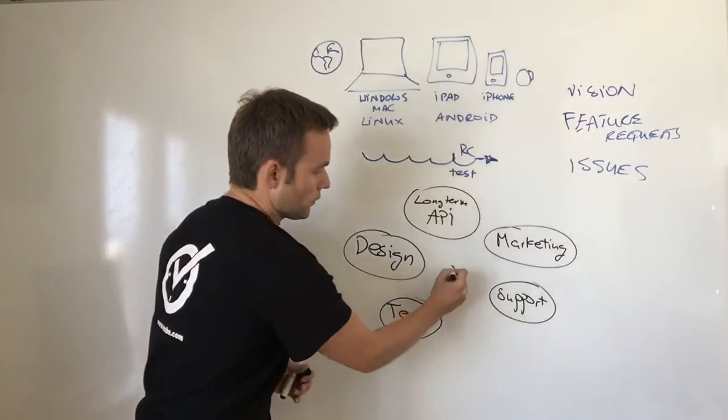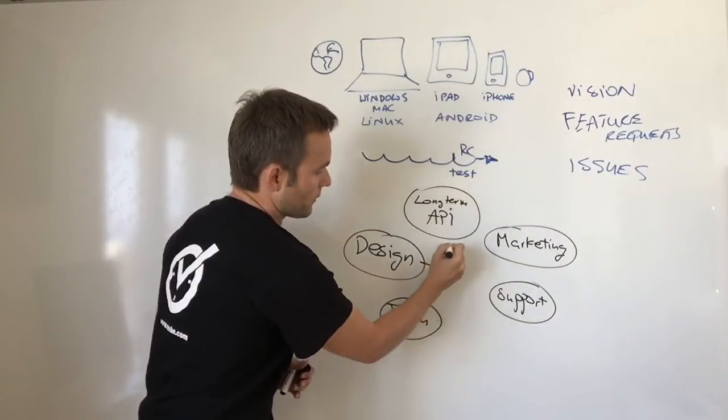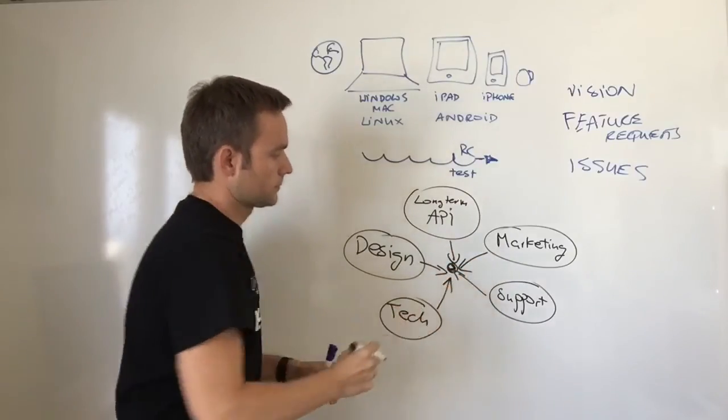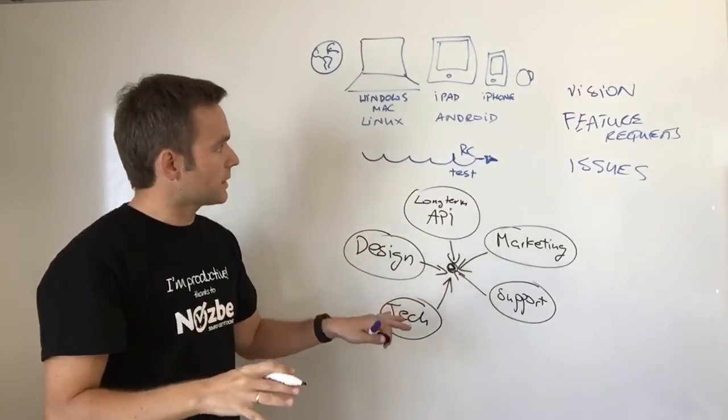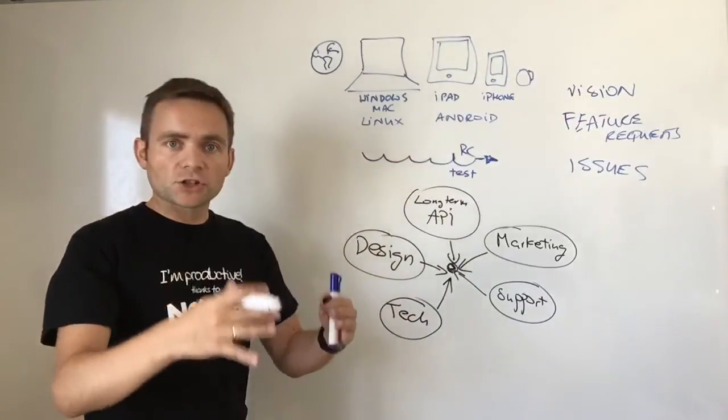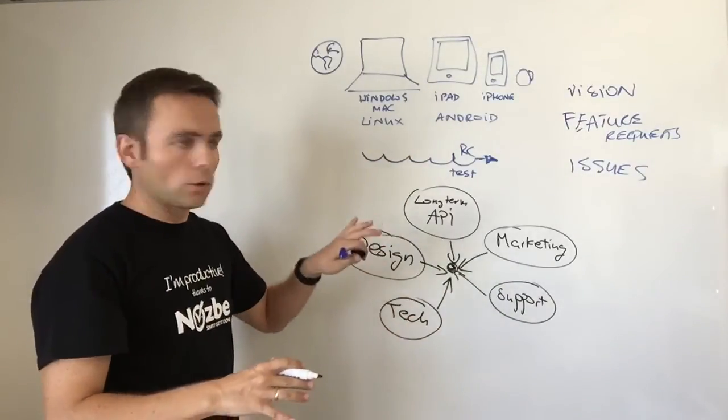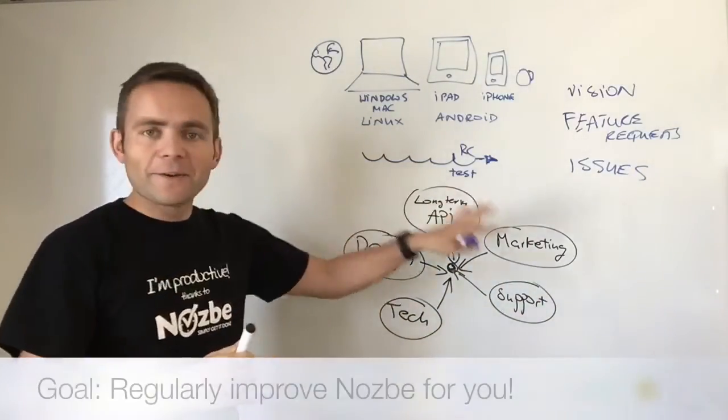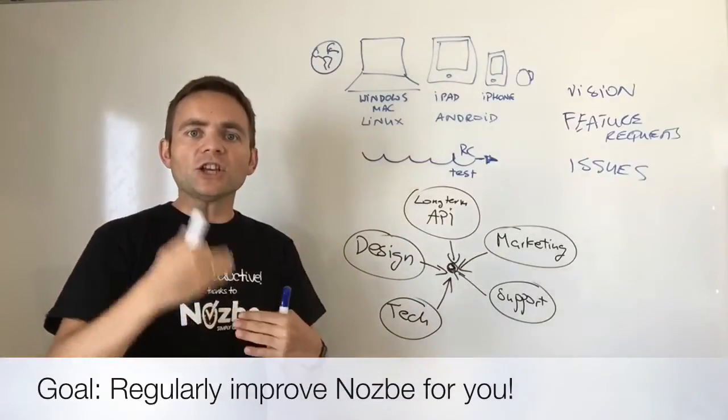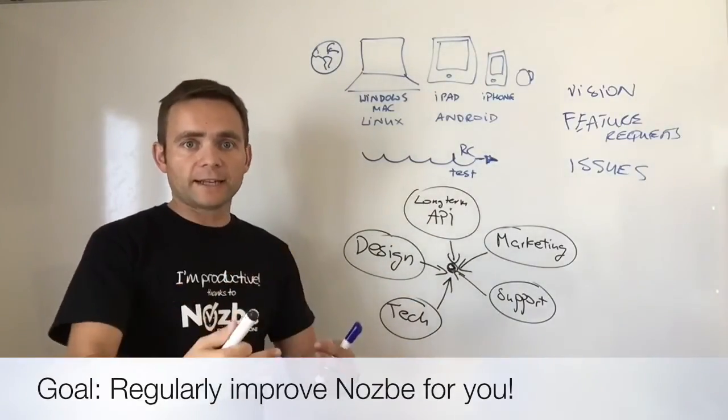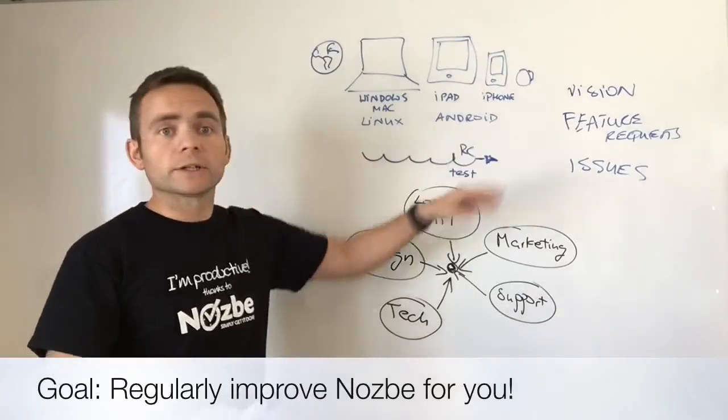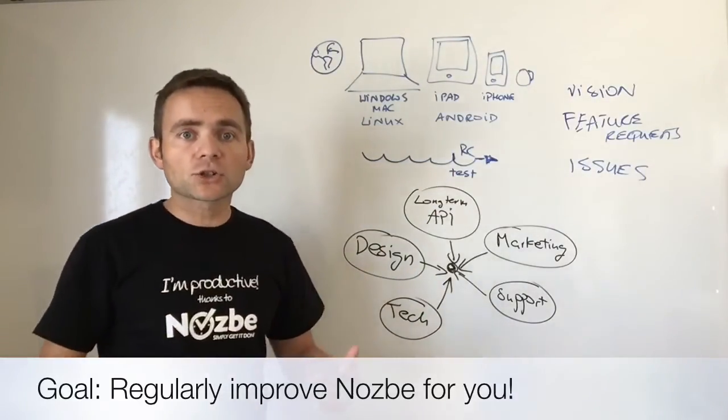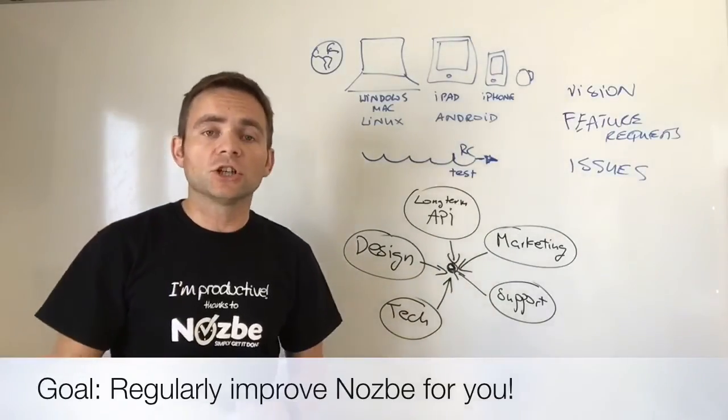So as you can see, in the new version of Nozbe, these five forces come together. We decide what goes into the next version of Nozbe, asking okay, what do we have to do here, here, here, here? We get to make everybody happy and make each release of Nozbe exciting. And we make it a regular iteration, just to move things forward and make sure that you get the best application to get things done.